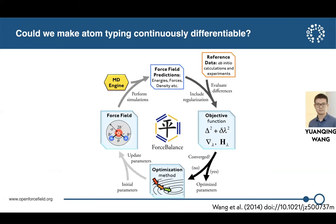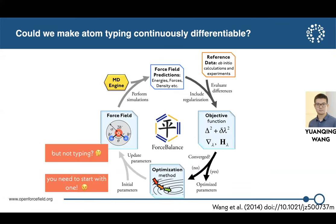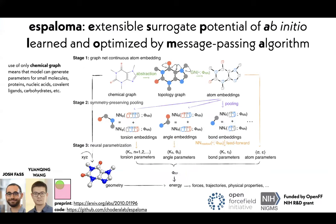Yuan Qingwang and the group, along with Josh Fast, decided that maybe everything else is continuously optimizable — is there some way to make the typing continuously optimizable as well? They thought about what if we had an embeddable way of saying how different every part of a molecule was from other similar parts in other molecules. And so they came up with a graph convolutional network.